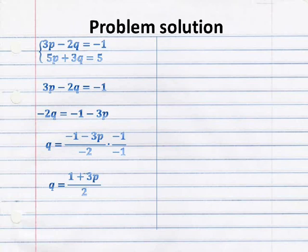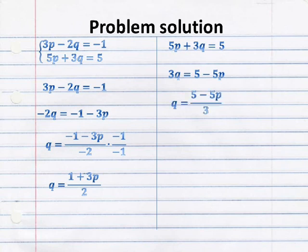Then we select the second equation to clear q again. Then q is equal to q. That means that the right side of each expression with q we found is our equal.